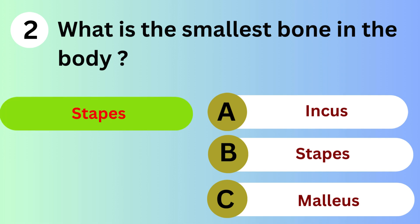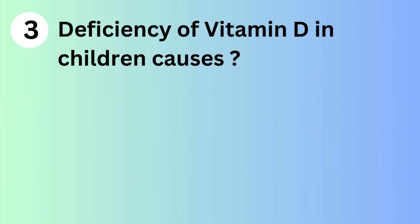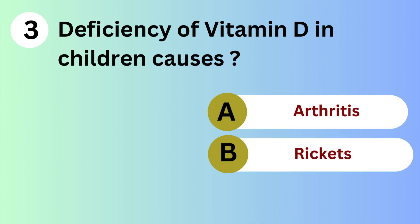Answer is B. Stapes. Deficiency of vitamin D in children causes: A. Arthritis. B. Rickets. C. Osteoporosis.